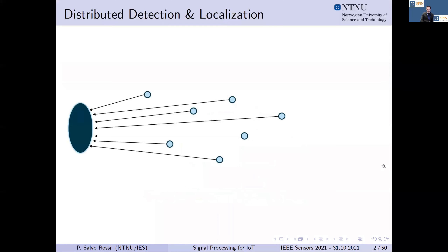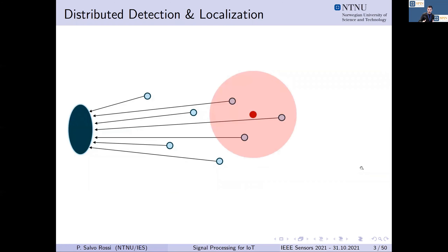The topics we will cover in this part are related to practical problems in distributed detection and localization, where we consider sensor networks with several sensors distributed in a geographical area trying to sense a specific event of interest. This can be a binary event, for instance the presence of a leakage in an oil platform or a pipe, or presence of fire in a forest. This information might be spatially located, and some sensors may be activated by the event while others may not.